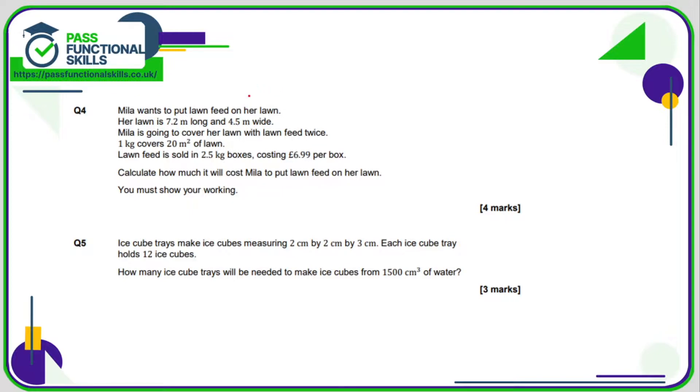For question number four, the first thing we need to do is calculate the area of the lawn. It's 7.2 long and 4.5 wide, so the area is length multiplied by the width—that's 32.4 square meters. But since she's going to cover the lawn with lawn feed twice, that's the same as if she's covering a garden once that is double that area. So I'm going to multiply that area by two, and that is 64.8 meter squared. Hopefully you've understood what's going on there.